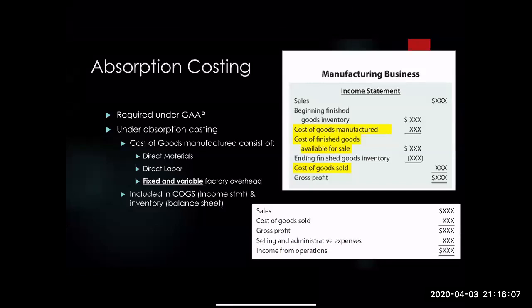We are talking about Chapter 6: variable costing for management analysis. What we're going to first do is dive into absorption costing. You may not have already known it, but we've already taken a look at absorption costing — you just didn't know it was called that. So let's jog your memory, and then we'll go into variable costing and how it looks a little bit different.